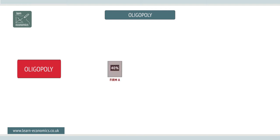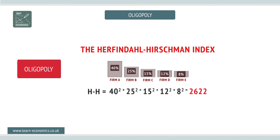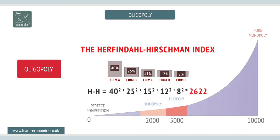The Herfindahl-Hirschmann index can also be used to assess the level of oligopoly and market concentration. It is calculated by squaring the market share of each firm in the market and then adding the results. The result can range from near zero to 10,000.